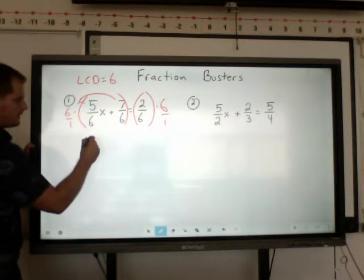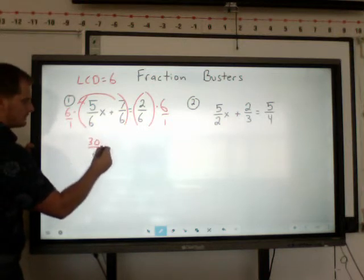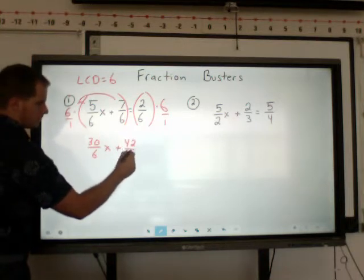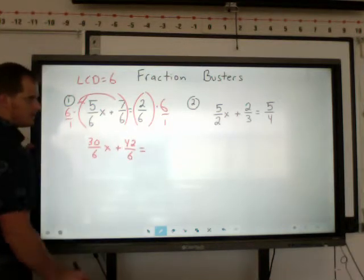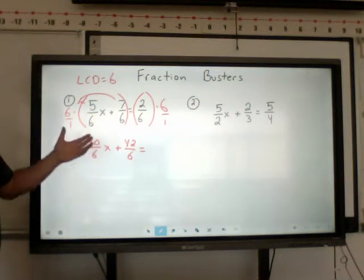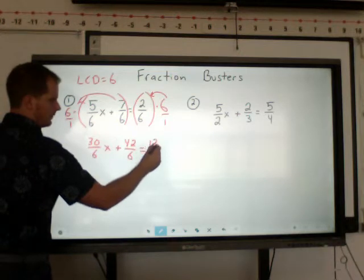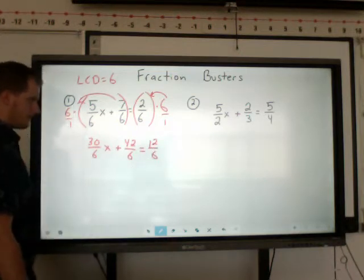So we're going to multiply 6 through on both sides. On this side, we're going to use the distributive property. We end up with 30 over 6x plus 42 over 6 equal to, and on the other side, because we multiply by 6 on one side, multiply by 6 on the other, you end up with 12 over 6.